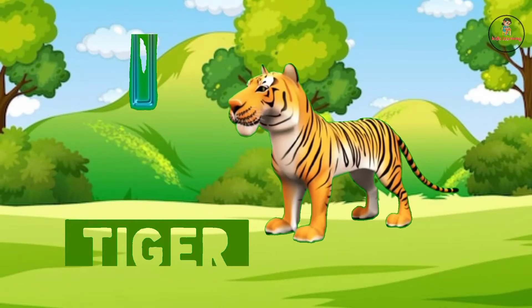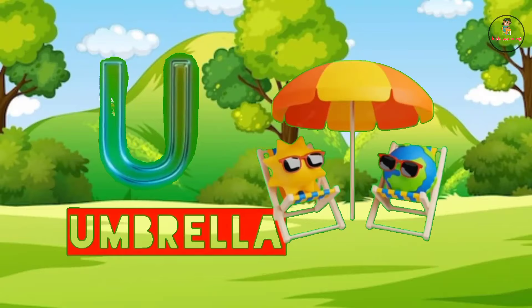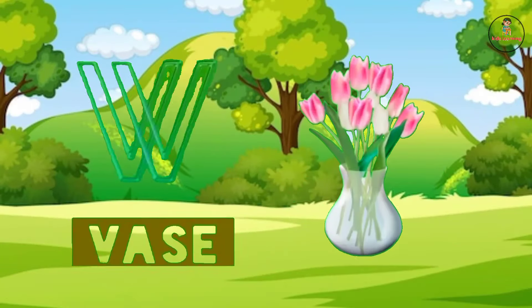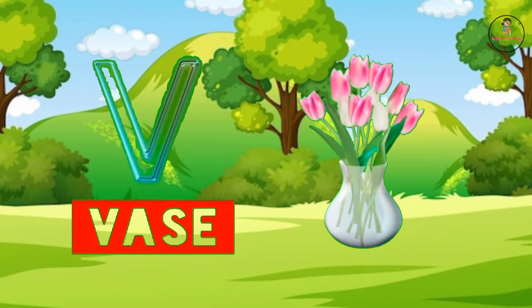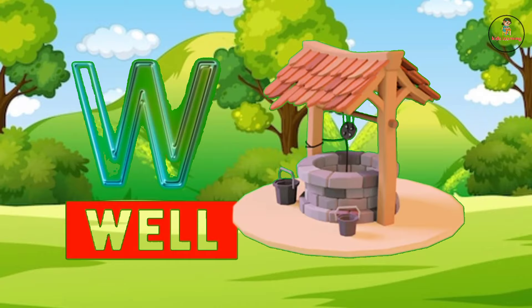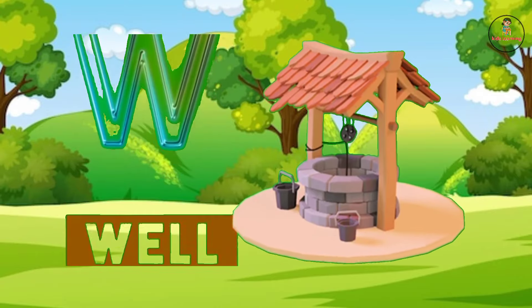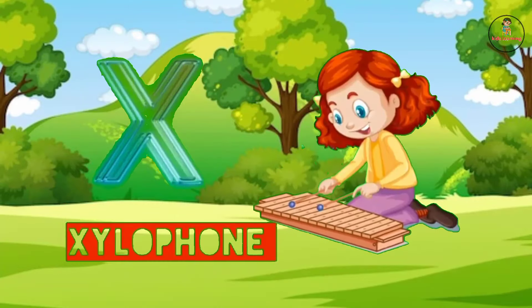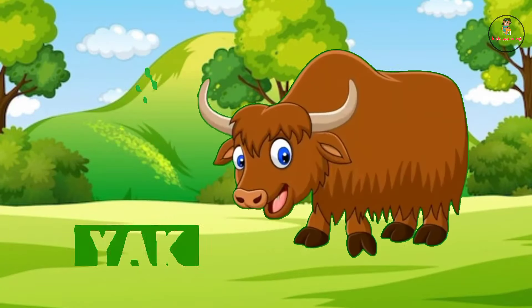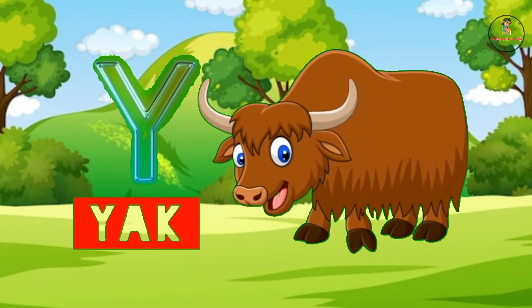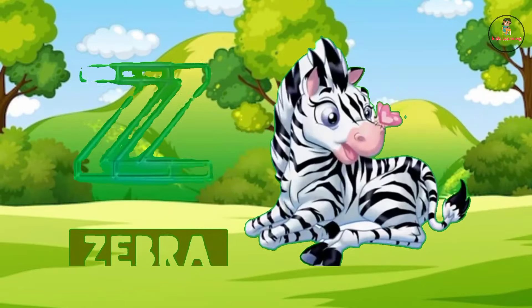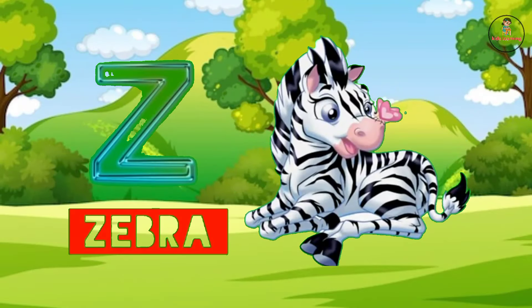U for umbrella, V for waist, W for well, X for xylophone, Y for yak, Z for zebra. Bye-bye.